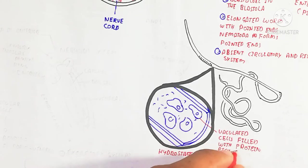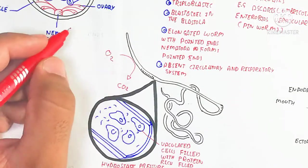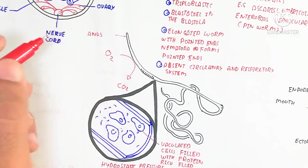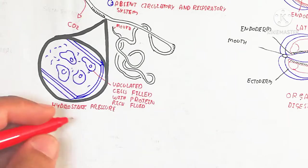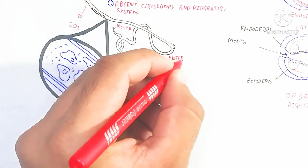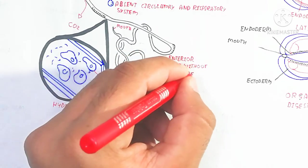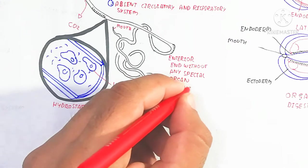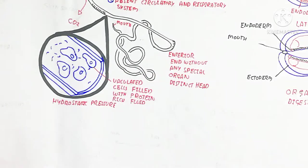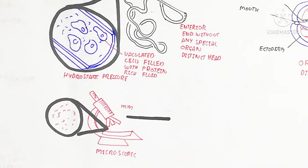The pseudocoelom, oviduct, and intestine are present, along with an excretory duct used for excretion. There is a hypodermis and endodermis containing vacuolated cells filled with protein-rich fluid, which produces hydrostatic pressure. This plays an important role as a hydrostatic skeleton — a water-filled body cavity that generates hydrostatic pressure.